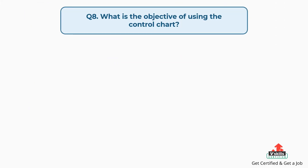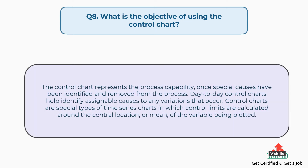Question number eight: What is the objective of using the control chart? The control chart represents the process capability once special causes have been identified and removed from the process. Day-to-day control charts help identify assignable causes to any variations that occur. Control charts are special types of time series charts in which control limits are calculated around the central location, or mean, of the variable being plotted.